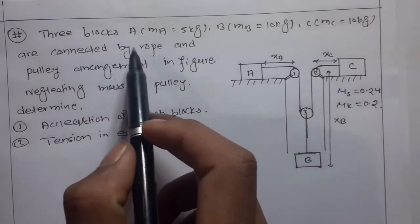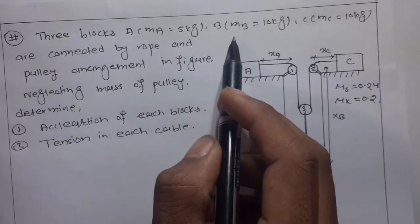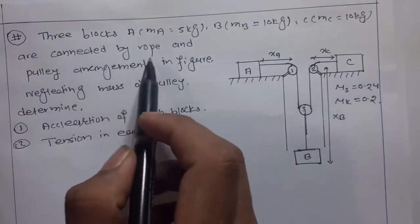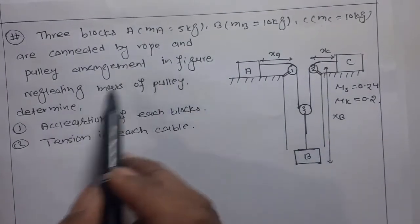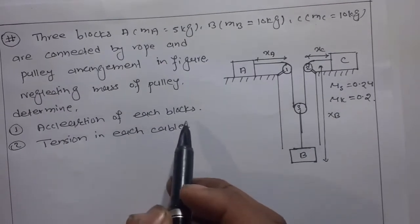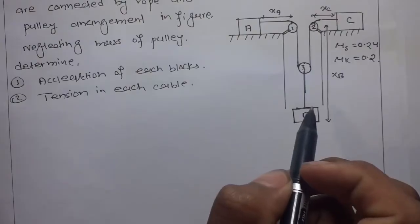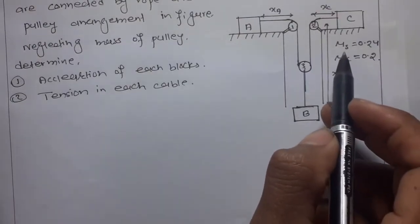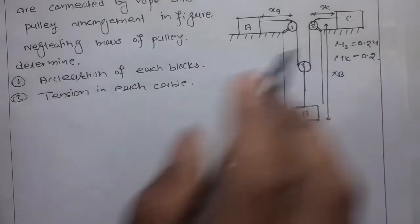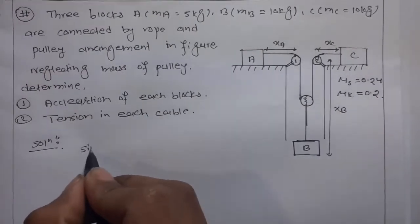The question involves three blocks: MA is 5 kg, MB is 10 kg, and MC is 10 kg, connected by a rope and pulley arrangement. Neglecting the mass of the pulley, determine the acceleration of each block and the tension in each cable. Given: μs = 0.24 and μk = 0.2.